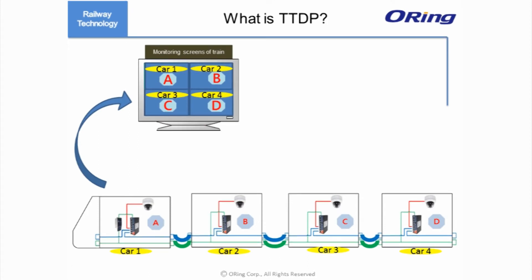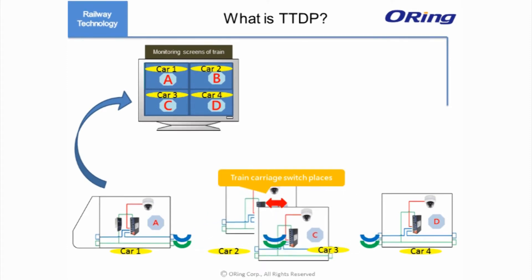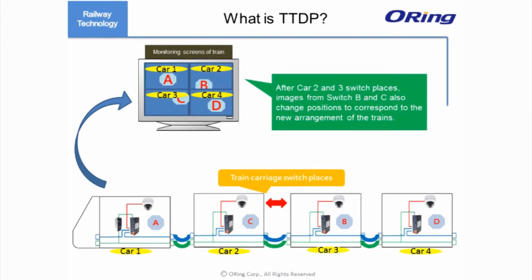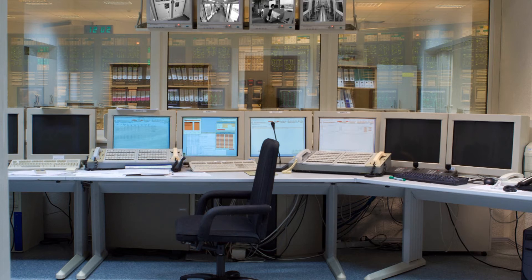Without TDDP, the images will be misplaced when the carriages are rearranged. When camera B and C switch places, car 2 screen will continue to show images from camera B even though it is now in the third carriage, and car 3 screen will show images from camera C, which is now in the second carriage. This is caused by the fixed IP addresses of the IP cameras.